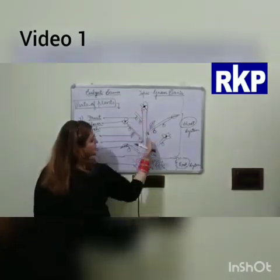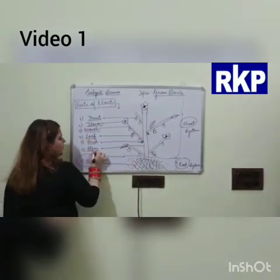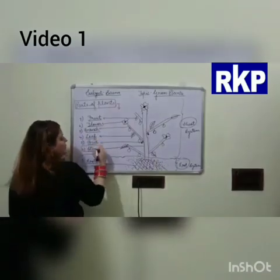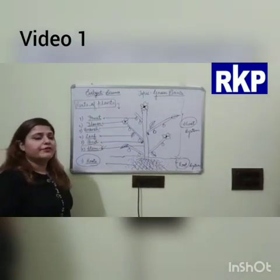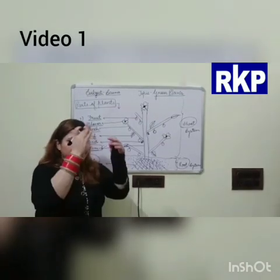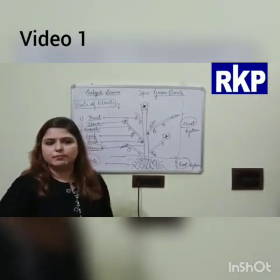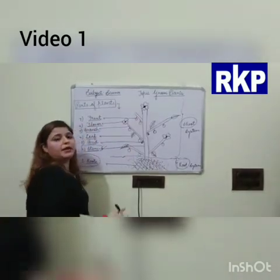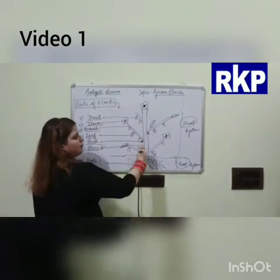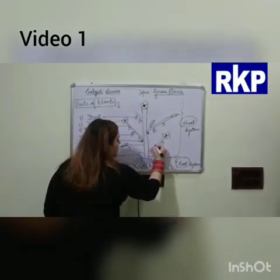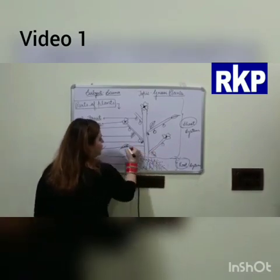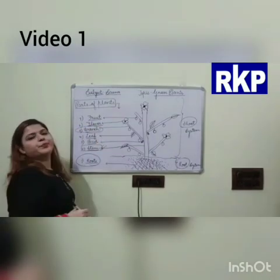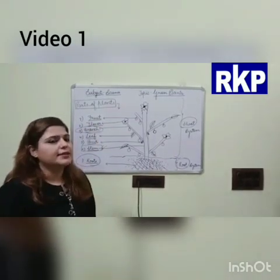One basic structural part of the shoot system is the stem. Stem is that part of the plant which gives support to the plant to stand straight — it keeps the plant upright. The extended parts of the stem are known as branches.